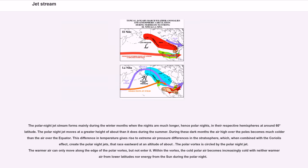The polar night jet stream forms mainly during the winter months when the nights are much longer, hence polar nights, in their respective hemispheres at around 60 degrees latitude. The polar night jet moves at a greater height of about than it does during the summer. During these dark months the air high over the poles becomes much colder than the air over the equator. This difference in temperature gives rise to extreme air pressure differences in the stratosphere, which, when combined with the Coriolis effect, create the polar night jets that race eastward at an altitude of about. The polar vortex is circled by the polar night jet. The warmer air can only move along the edge of the polar vortex, but not enter it. Within the vortex, the cold polar air becomes increasingly cold with neither warmer air from lower latitudes nor energy from the sun during the polar night.